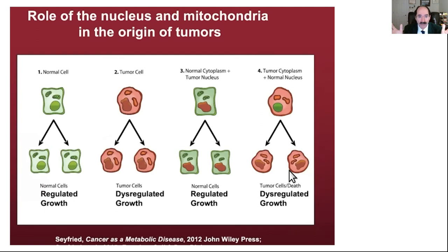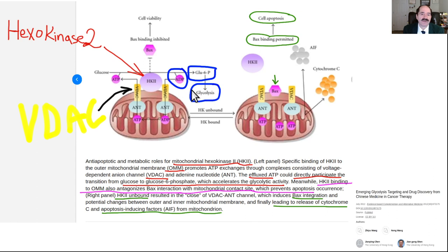That is a confirmation of the metabolic theory of cancer and a refutation of the genetic or mutation theory. Most people can't understand cancer because they're studying the genetic mutation theory and getting confused. If you study the Warburg effect and the metabolic theory of cancer, everything makes sense. And there's wonderful good news: once you understand cancer metabolically, you can do a lot to improve the metabolism of your cells so cancer is less likely to develop or grow.